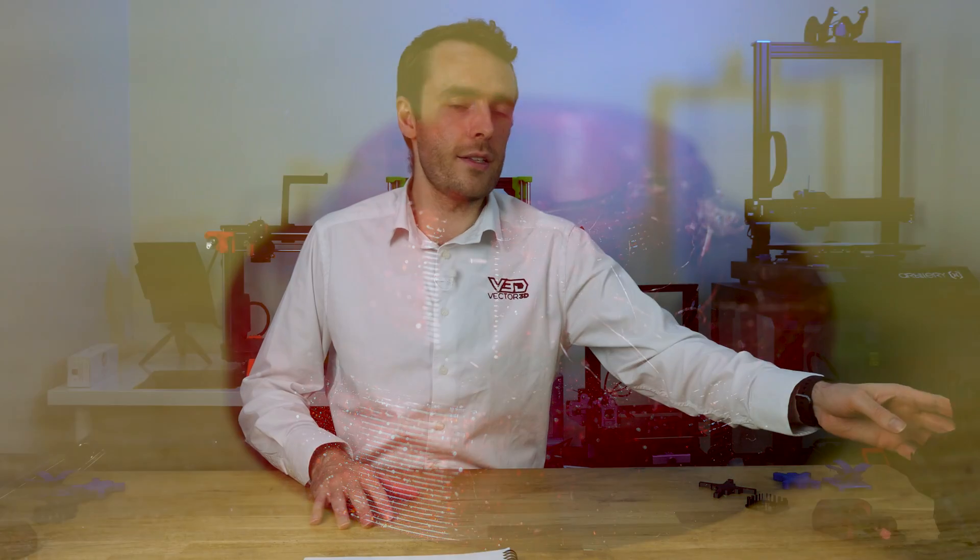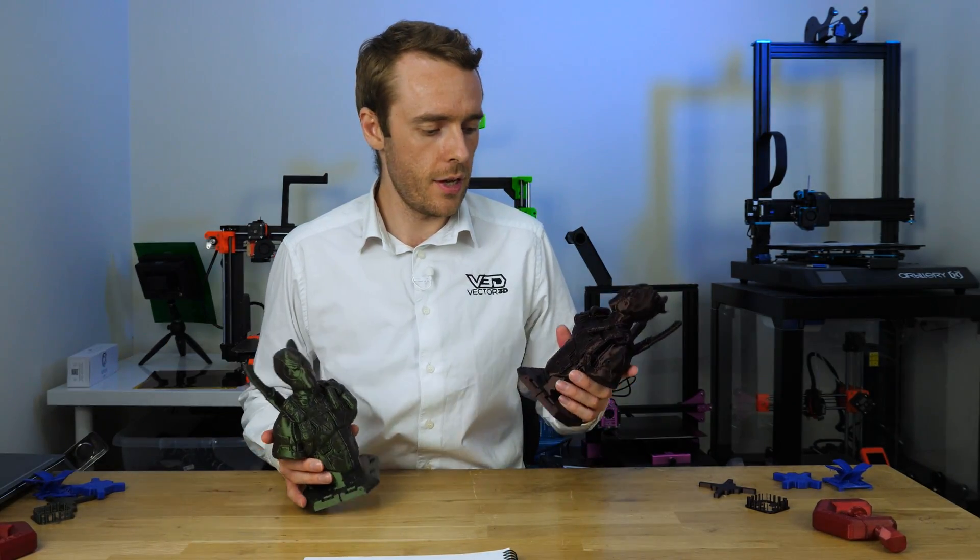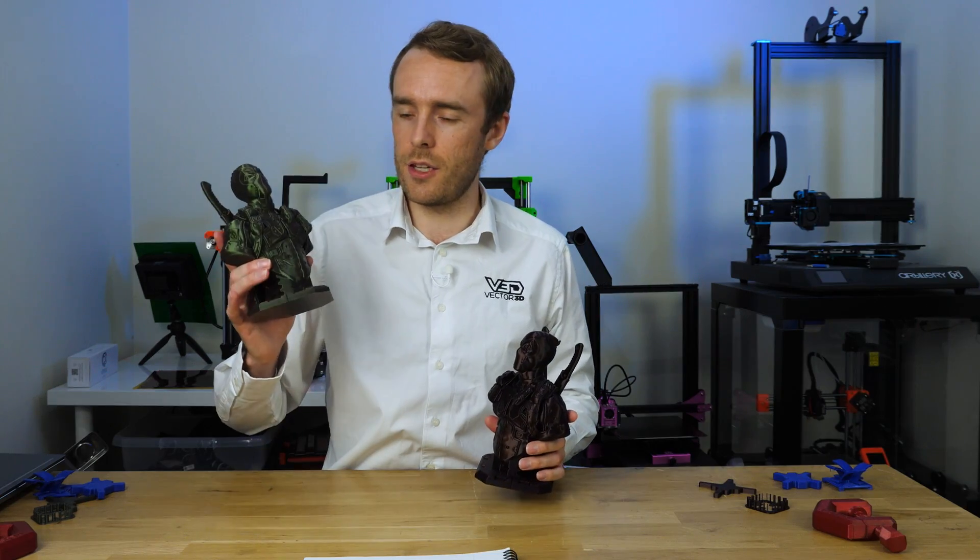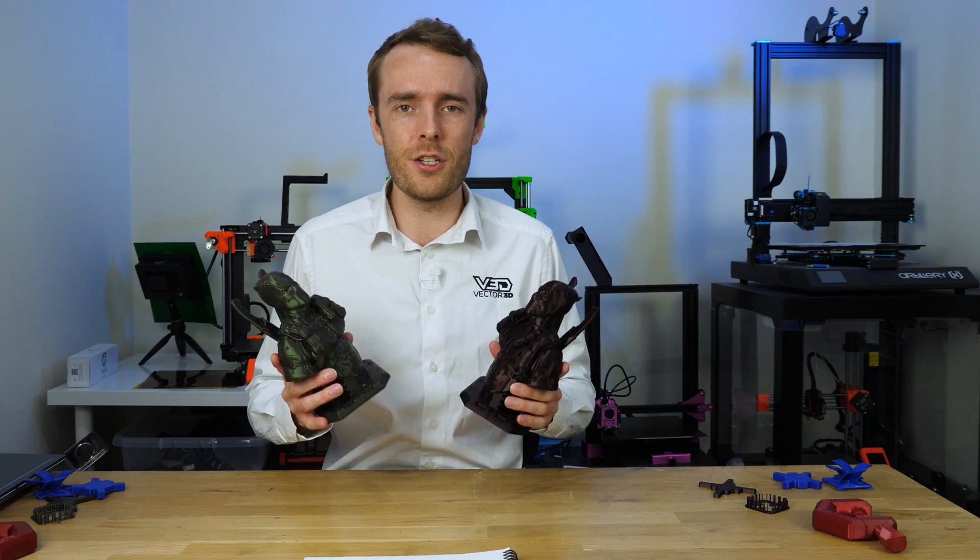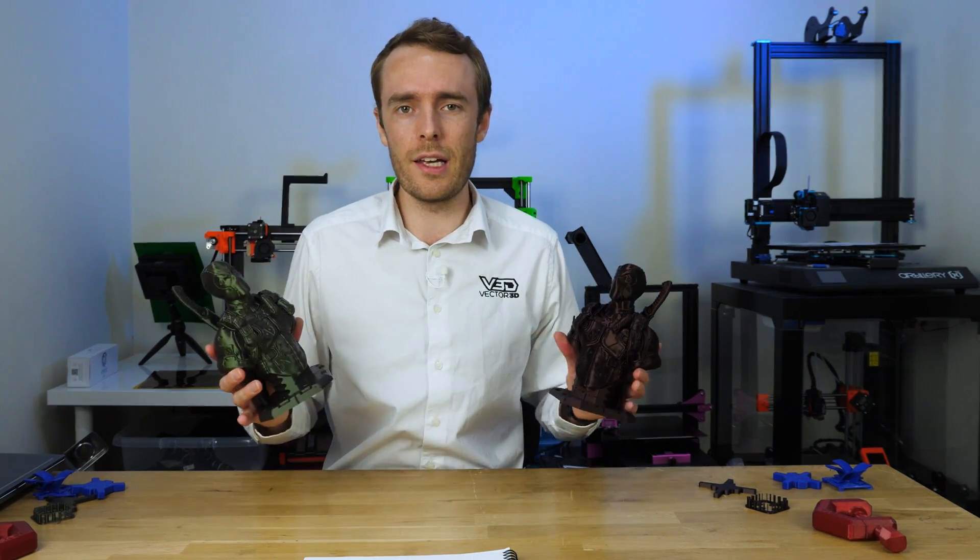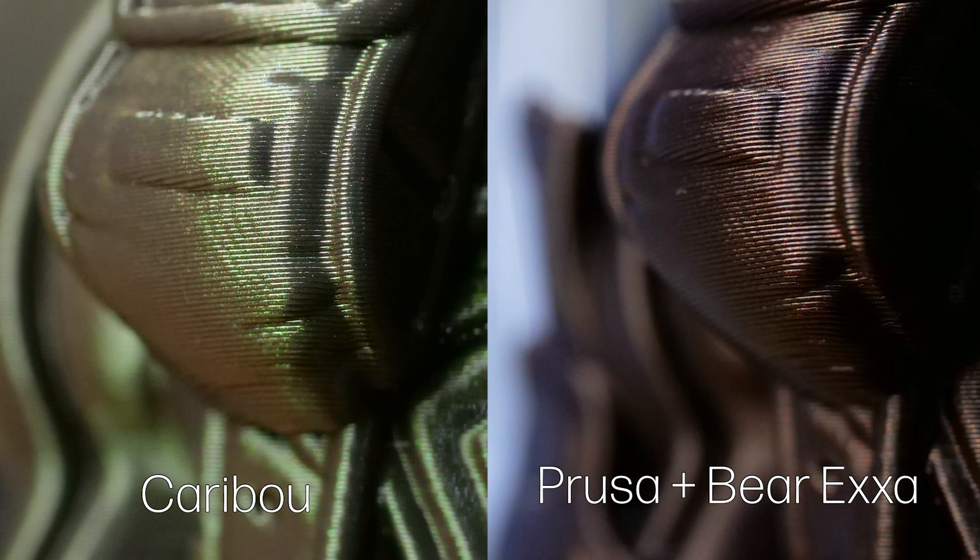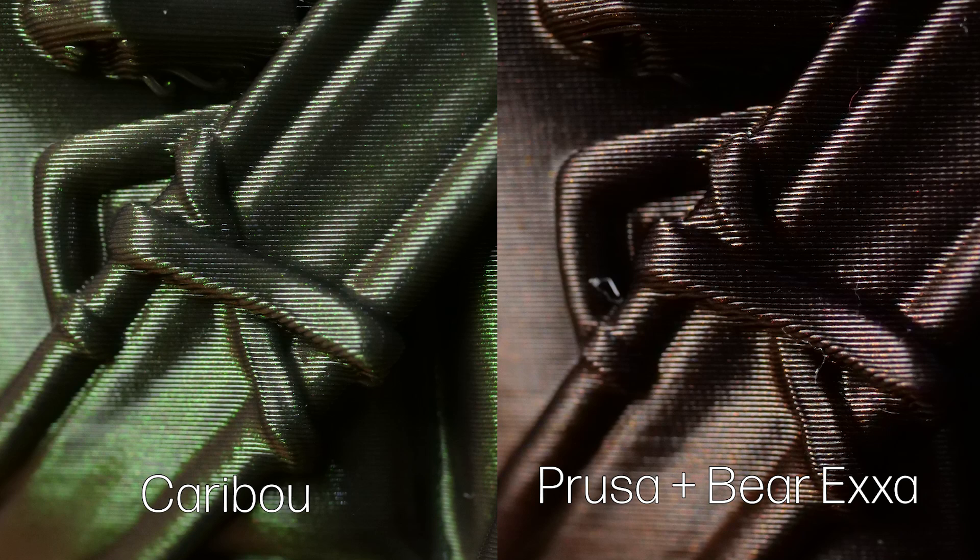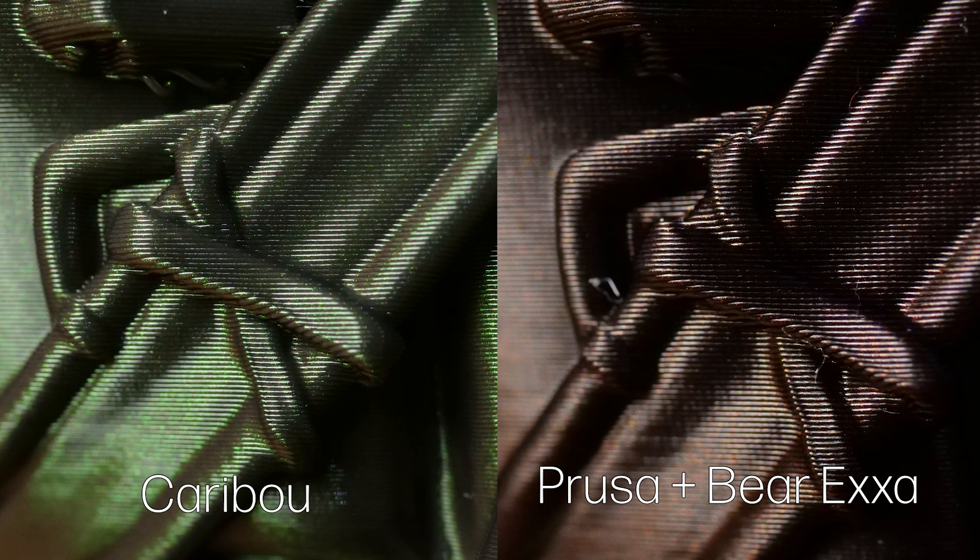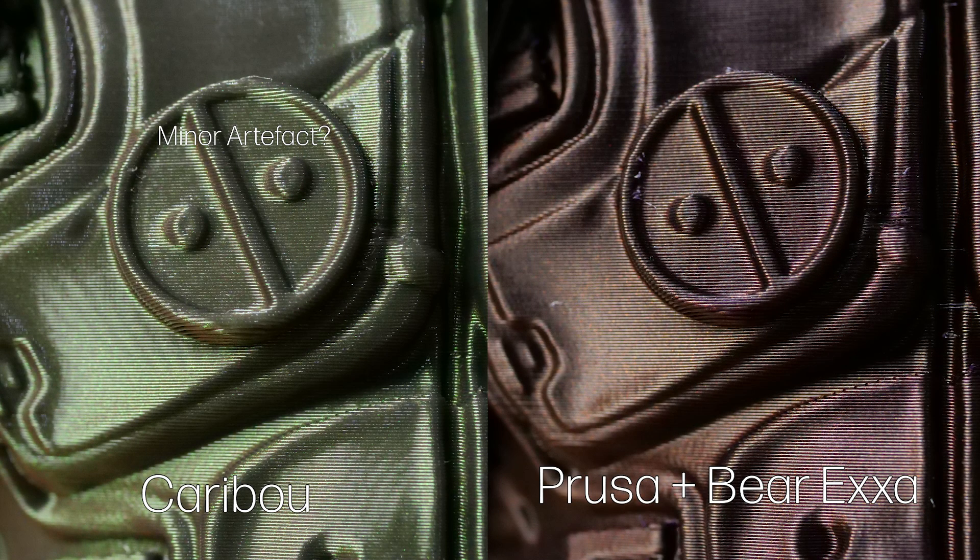The last print we have to take a look at is the Deadpool print. So this is out of Prusament PLA on both machines. This one is the Mystic Brown and this one is Mystic Green. So the aesthetic qualities might look a little bit different in each of the two colors but largely speaking we should see fairly equivalent performance on both of these prints. Looking at them overall by looking down maybe the body at the front the performance does look very consistent all the way down. The lines are definitely very precise. There does seem to be some slight issue with alignment on the Caribou machine with some slight artifacting but it's very very minor.